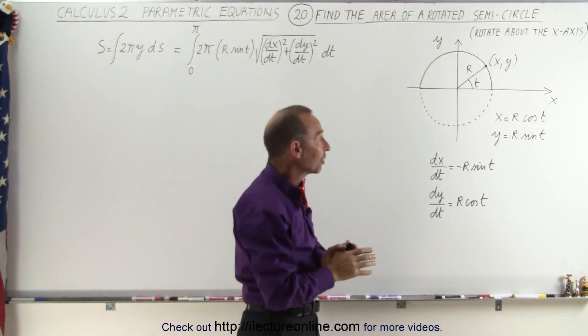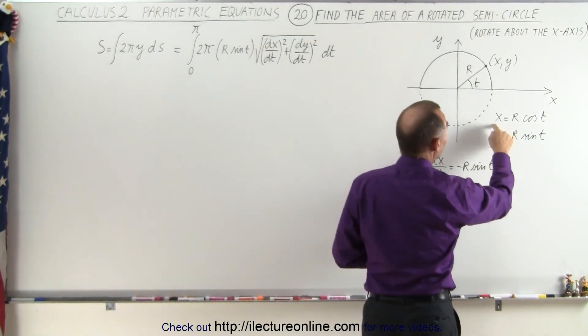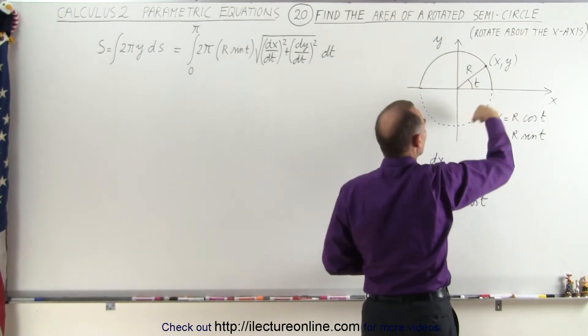We're going to use parametric equations because with parametric equations it's actually a lot easier. So we have x equals r cosine theta, y equals r sine theta defining the circle.